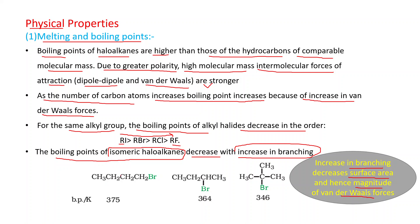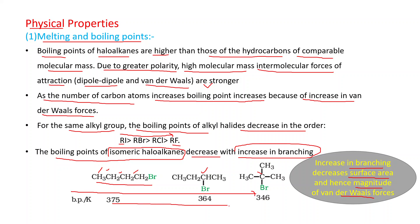For example, consider 1-bromobutane, 2-bromobutane, and 2-bromo-2-methylpropane (2,2-dimethylpropane). Going from 1-bromobutane to the more branched structures, branching increases and surface area decreases, so boiling point also decreases.